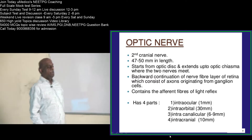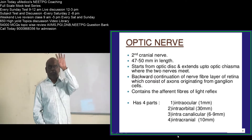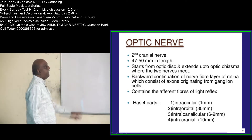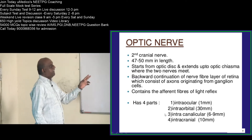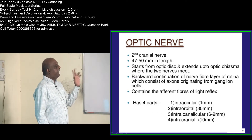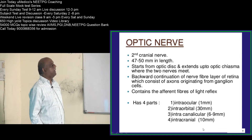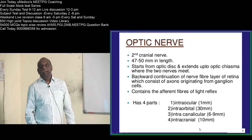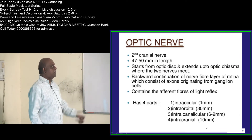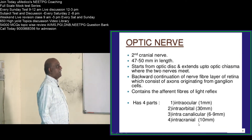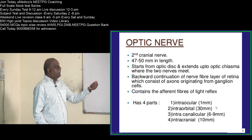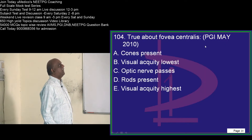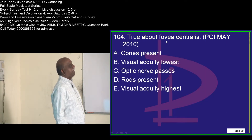The optic nerve has four parts: intra-ocular, intra-orbital, intra-canalicular, and intra-cranial. The intra-cranial part is about 1 mm. The intra-orbital part is the major part at 30 mm — that is what you have to ultimately remember.